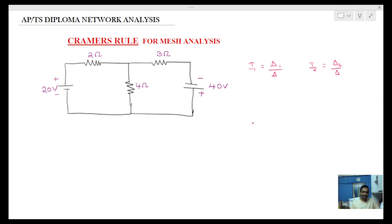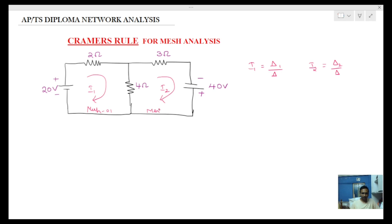Let's look at a simple example problem. We have mesh currents i1 and i2. For fundamentals, we will discuss the equations first — for mesh 1 and mesh 2.